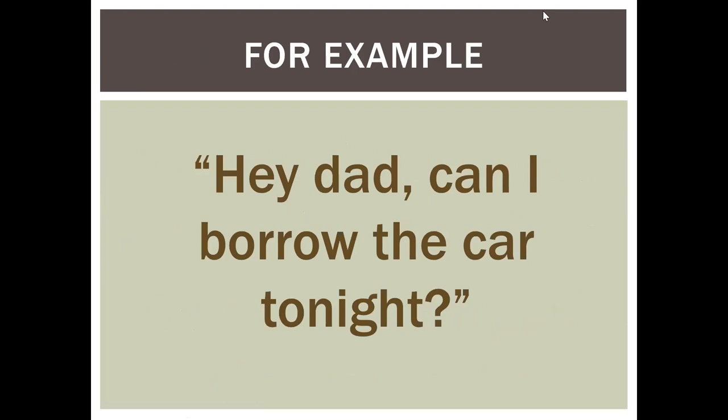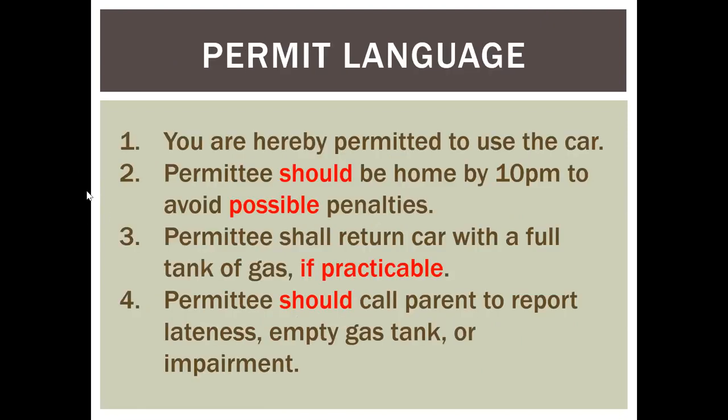Here's an example of the difference. Say your child wants to borrow the car. If you issued your child a permit to use the car, you might say: 'You are hereby permitted to use the car. Permittee should be home by 10 p.m. to avoid possible penalties. Permittee shall return car with a full tank of gas if practicable. And permittee should call parent to report lateness, empty gas tank, or impairment.'